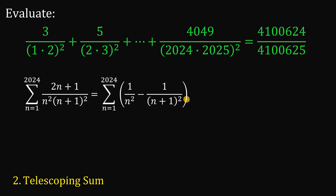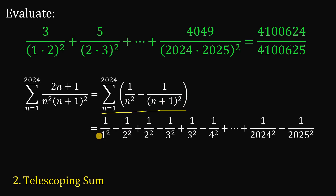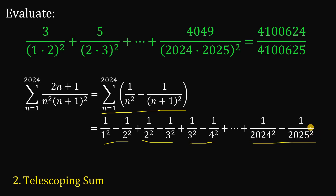If we apply the concept of summation we arrive at the sequence: 1 over 1 squared minus 1 over 2 squared, plus 1 over 2 squared minus 1 over 3 squared, plus 1 over 3 squared minus 1 over 4 squared, and so on until 1 over 2,024 squared minus 1 over 2,025 squared. This is very familiar because we saw it in our previous solution.